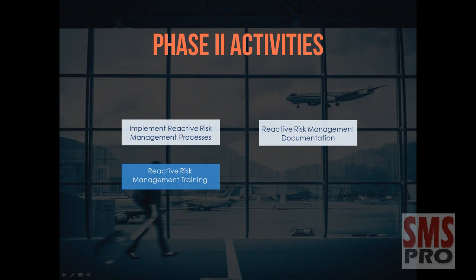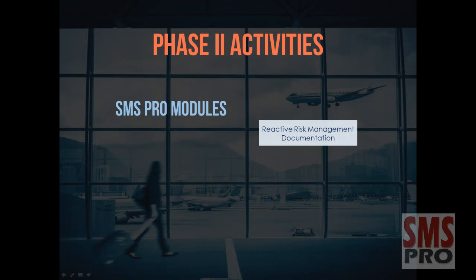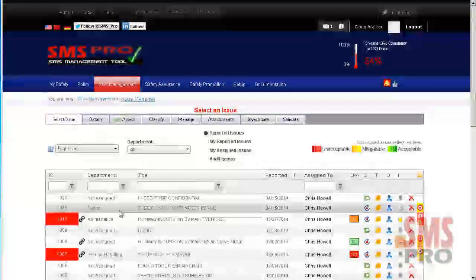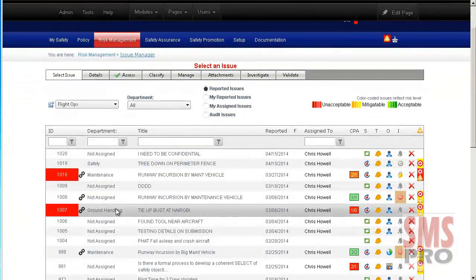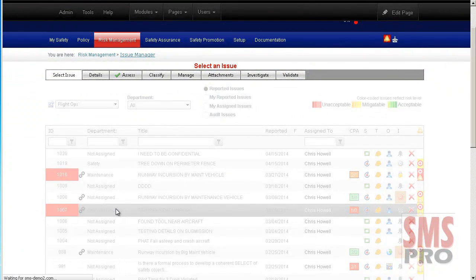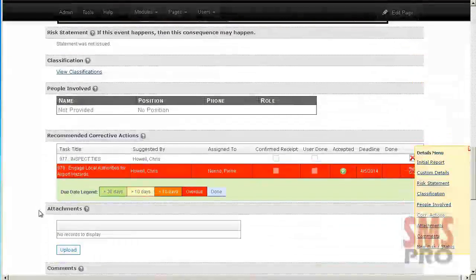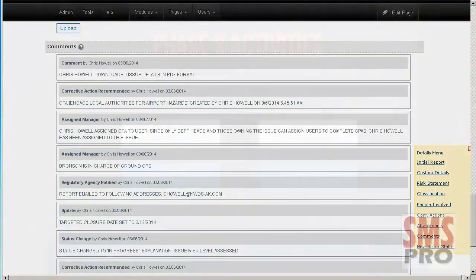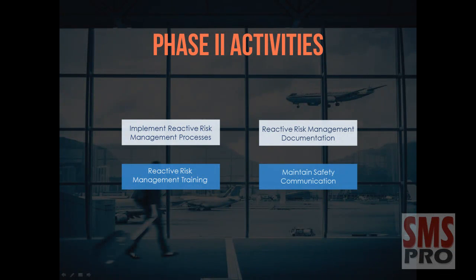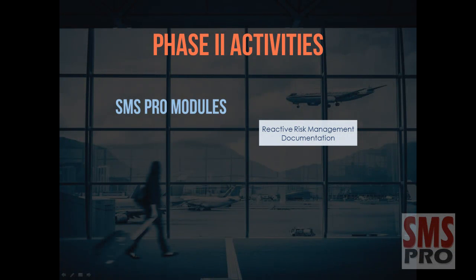Maintaining documentation relevant to reactive risk management is achieved through SMS Pro's Issue Manager module, which can document all of the risk management activities that occur in your SMS. Throughout an issue's lifecycle, all management activities are documented and can be reviewed in the Issue Details tab. A history of all user-added and system-added comments can also be viewed there. The modules identified in Phase 1 continue to provide the means for safety communication.